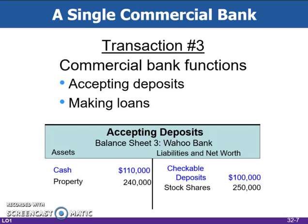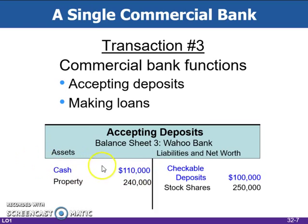The bank has increased its value by accepting deposits from customers. The deposits are recorded as liabilities of the bank, as the bank must return the money to customers whenever they request it. But the assets of the bank also increase, as the bank now has more cash. Checkable deposits — the money that customers bring into the bank — go on the liabilities and net worth side, in this instance $100,000. On the assets side, we have $100,000 added to our cash assets; originally we had $10,000. Notice the two sides still equal — they both now have $350,000.